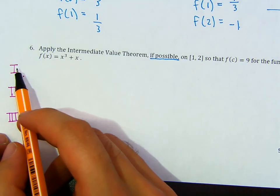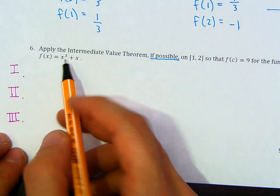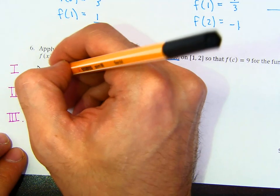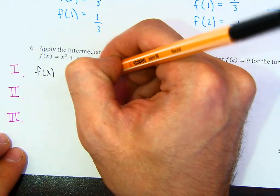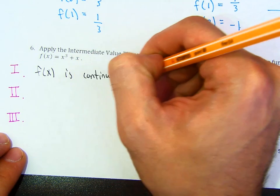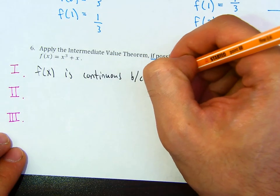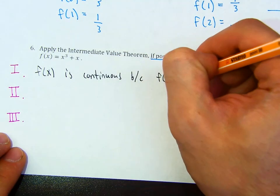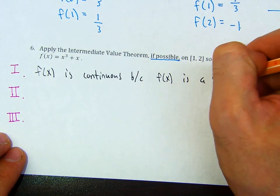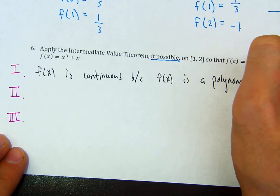Part 1: is f of x continuous? Yes, f of x is continuous because f of x is a polynomial, and all polynomials are continuous.